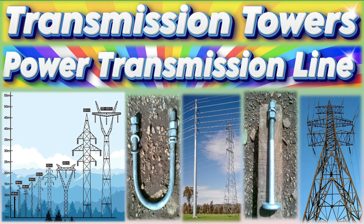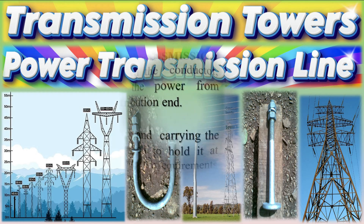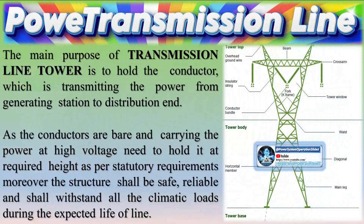The main purpose of a transmission line tower is to hold the conductor, which transmits power from the generating station to the distribution end. As the conductors are bare and carry power at high voltage, they need to be held at the required height as per statutory requirements. Moreover, the structure shall be safe, reliable, and shall withstand all climatic loads during the expected life of the line.